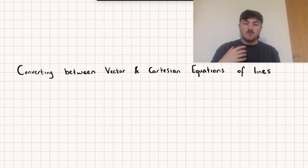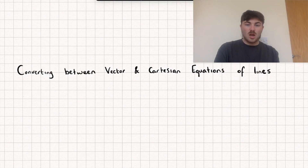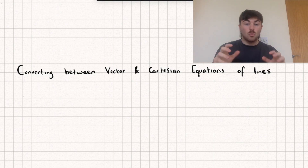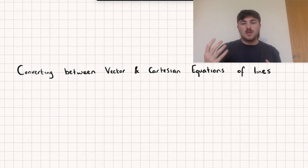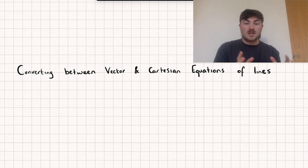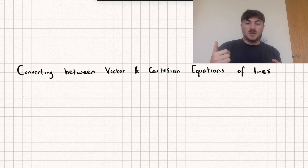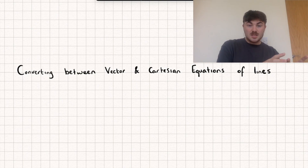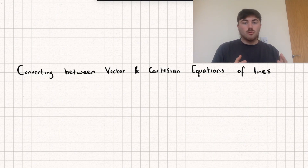In this video we're going to be looking at how to convert between vector and Cartesian equations of lines. I'll cover quite a few different things and timestamp them all below so you can skip to whichever you want. We're going to look at things like: given a point on a line and its gradient, how to find its vector equation; how in two dimensions the gradient and direction vector are related; how to go from a vector equation to Cartesian and vice versa; as well as some general forms of these lines.